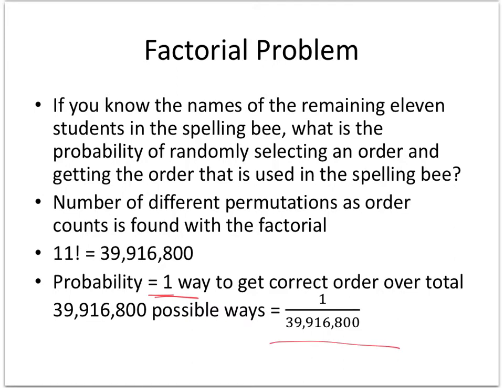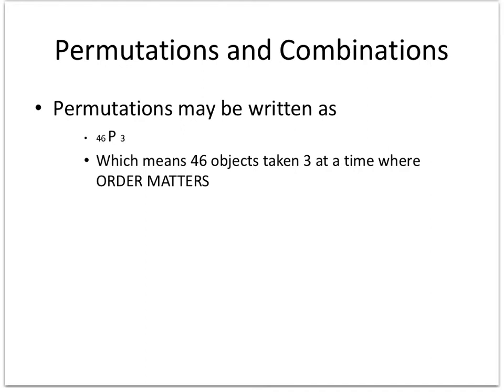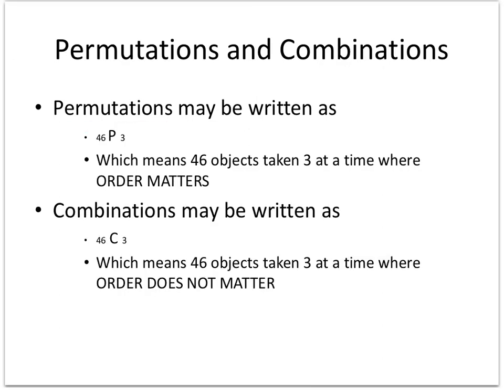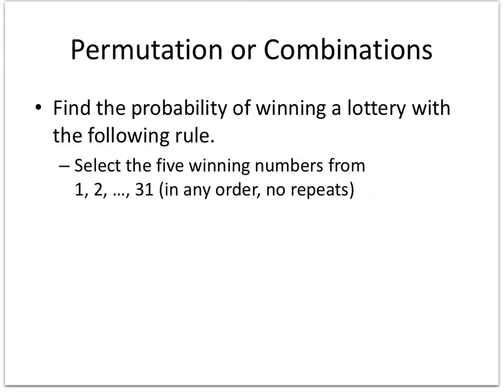Permutations may be written as 46P3, meaning 46 total objects taken 3 at a time. Permutations are used when order matters; combinations use the letter C, as in 46C3, where it's the same 46 objects taken 3 at a time but order does not matter. For example, a race with first, second, and third place is a permutation; arranging books on a bookcase where order doesn't matter is a combination.